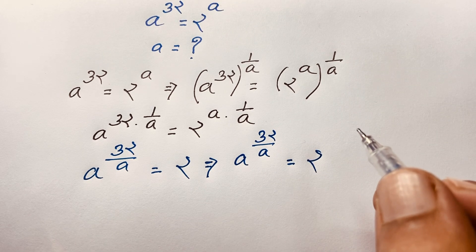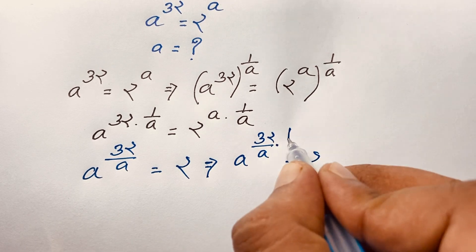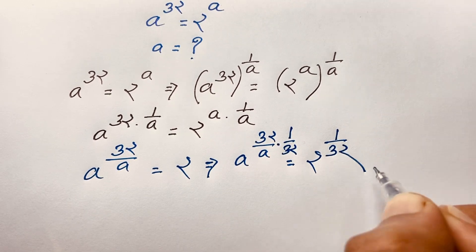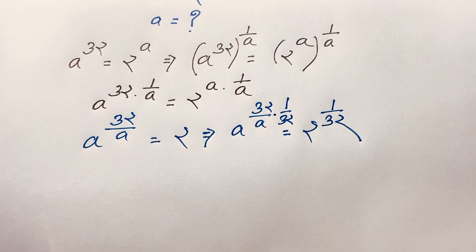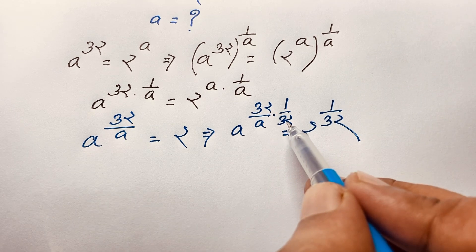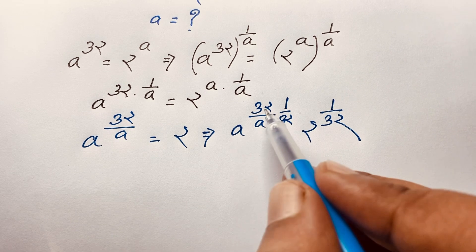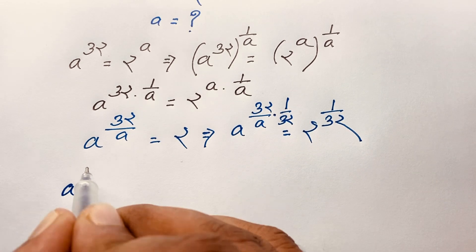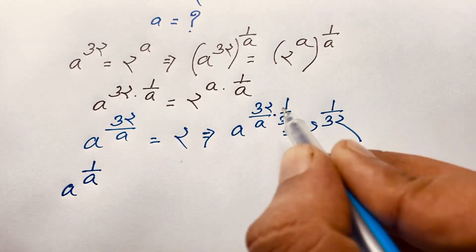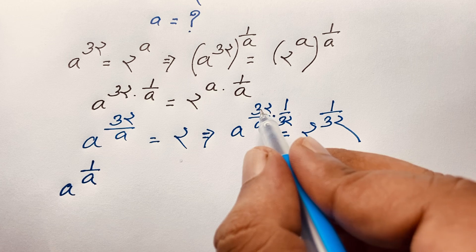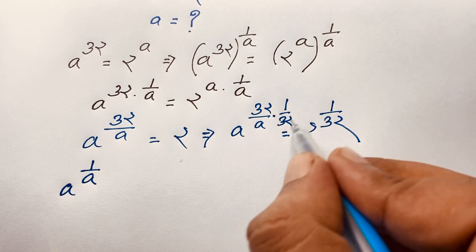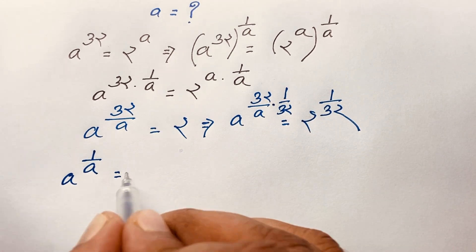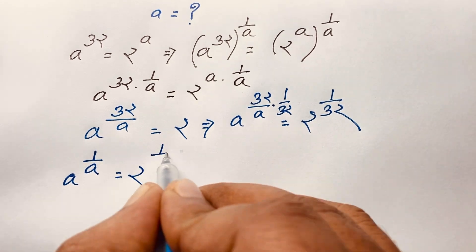Now I use both sides again with exponent 1 over 32. This 32 and this 32 cancel. We find out a to the power 1 over a. So we find out a to the power 1 over a — this 32 and this 32 cancel out — and here is 2 to the power 1 over 32.